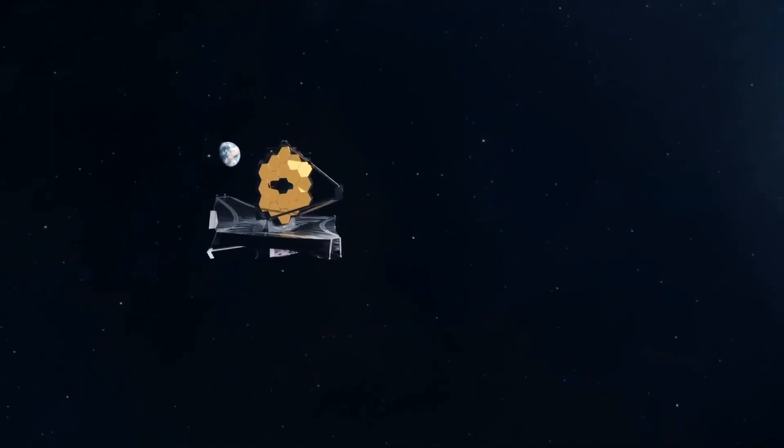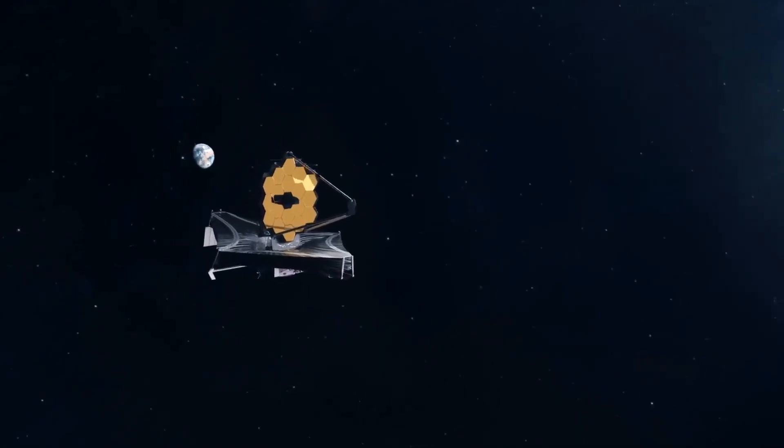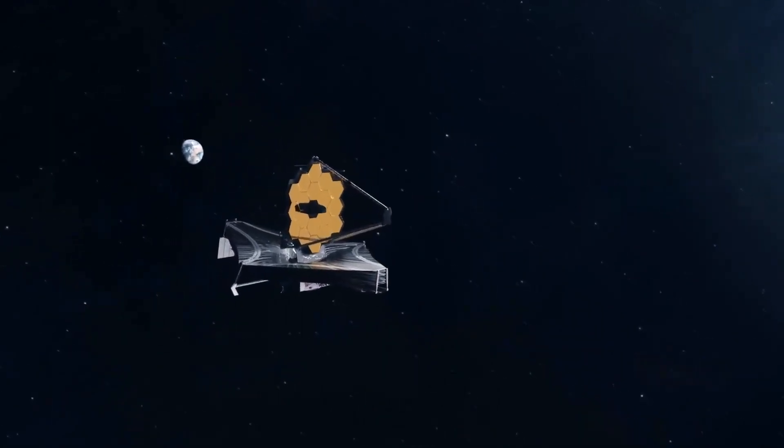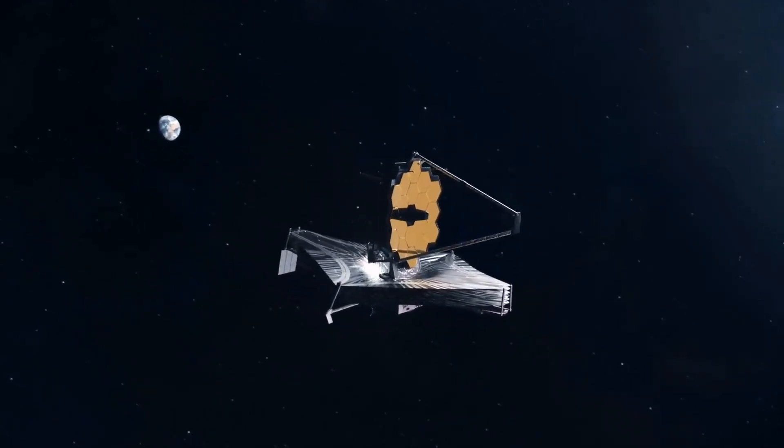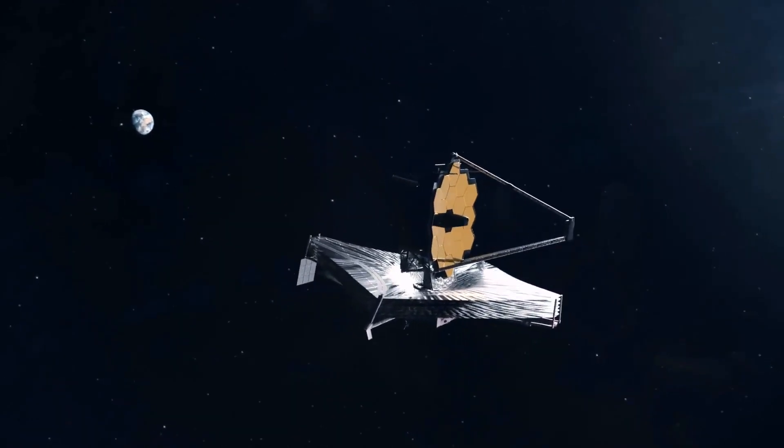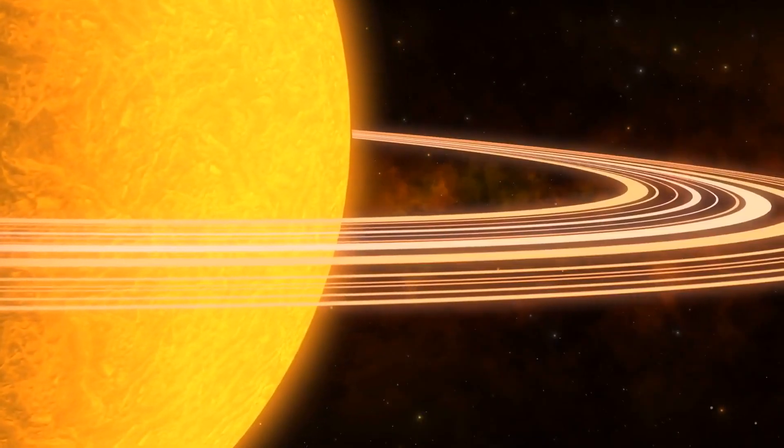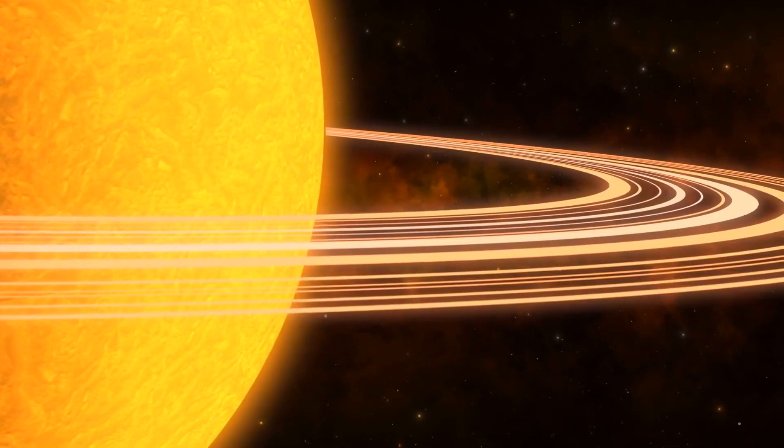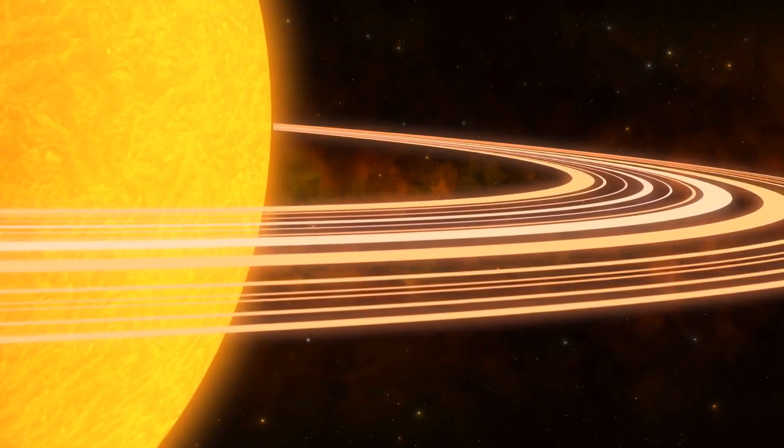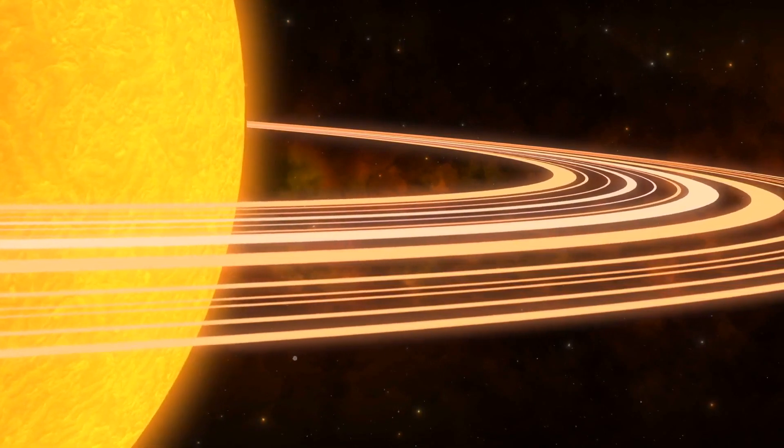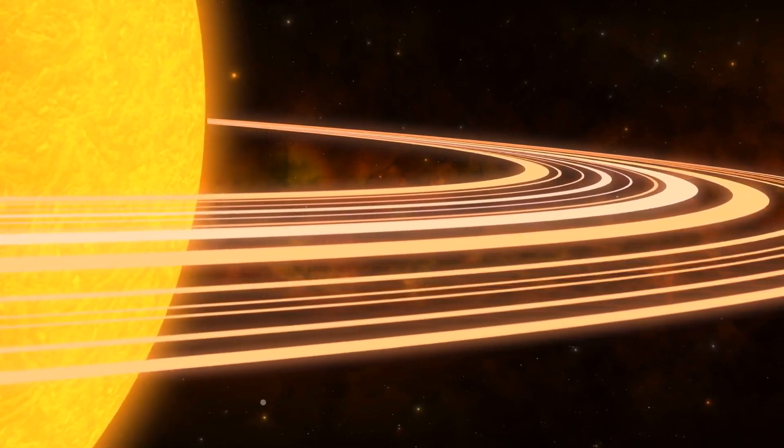The telescope's remarkable efficiency extended to our solar system as well. The JWST captured unprecedented images of Neptune's rings and moons, providing scientists with a wealth of information that had been elusive for over three decades. The telescope unveiled the faint, dusty bands of Neptune's icy rings, including new, previously undiscovered rings. This new information expanded our understanding of Neptune's ring system.